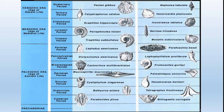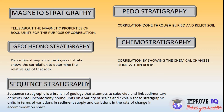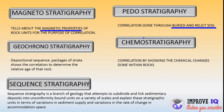If you want a succession of fossils, you can take a snap of the diagram. Magnetostratigraphy tells about the magnetic properties of rock units for the purpose of correlation — the magnetic properties of corresponding rock lead the stratigraphic study. Then, pedostratigraphy: here correlation of rock is done through buried and relict soil, so buried objects found in corresponding rock types lead the stratigraphic study.